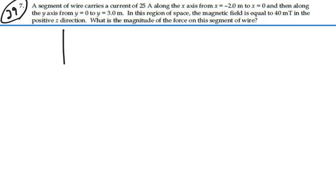Let's imagine what we have here. We have a segment of wire carrying the current from x equals minus 2 to x equals 0, and then along the y-axis from y equals 0 to y equals 3.